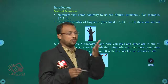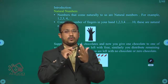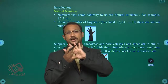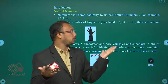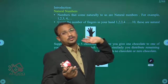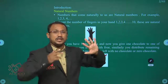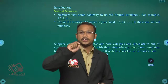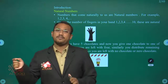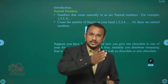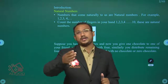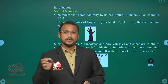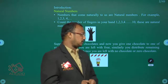Suppose you count the number of fingers on your hand: one, two, three, four, five, six, seven, eight, nine, ten — and so on. These are called natural numbers. You are counting naturally, not skipping any number. That is called natural numbers.